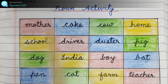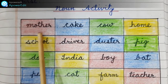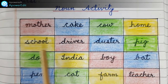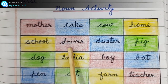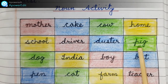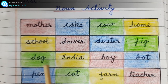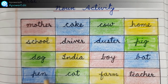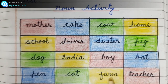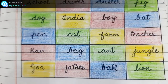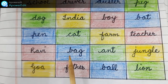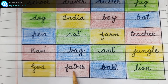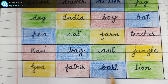Noun activity. Words written: mother, cake, cow, home, school, driver, duster, pig, dog, India, boy, bat, pen, cat, farm, teacher, Ravi, bag, ant, jungle, Goa, father, ball, lion.